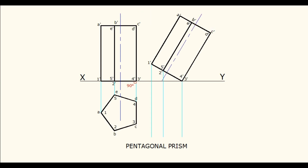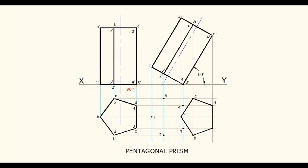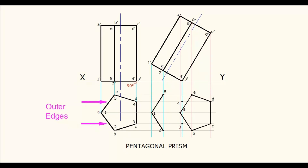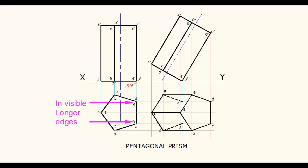Draw projection lines from both the top and bottom bases of the second stage elevation. Draw projectors from the first stage plan also. Identify the corresponding intersection points of the top base and darken all these edges, because all the top edges are going to be visible. Identify the corresponding intersection points of the bottom base and darken only the outer edges — inner edges should be drawn dotted. Visible longer edges should be drawn as dark lines; invisible longer edges should be dotted lines.